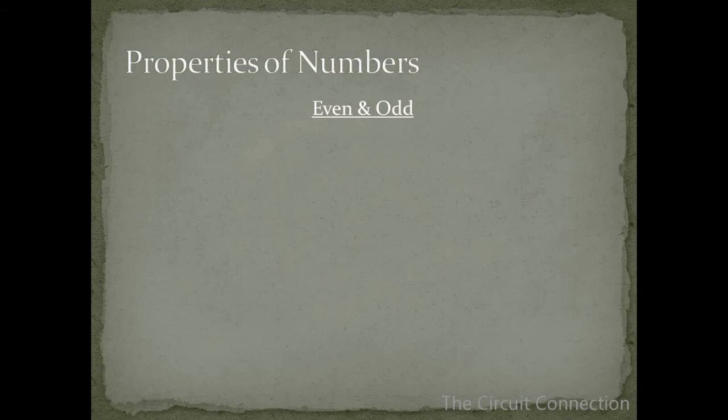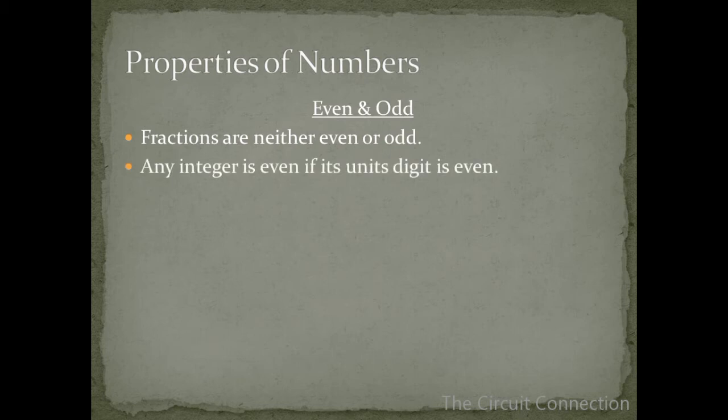Even and odd. Some more on that. Fractions are neither even or odd. Any integer is even if its units digit is even. So for example, 3576 over 2 is equal to 1788. That's because our 6 here in our units place is even, so that makes the whole rest of the number an even number.